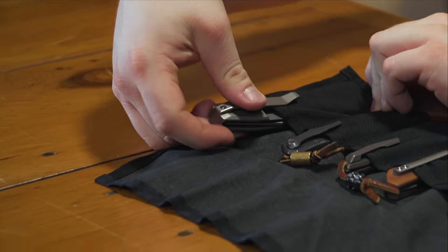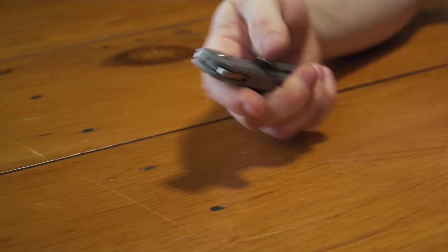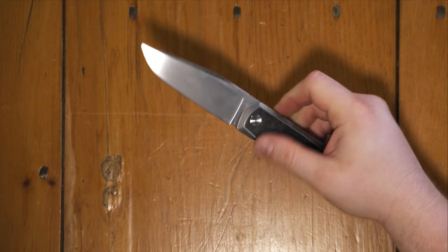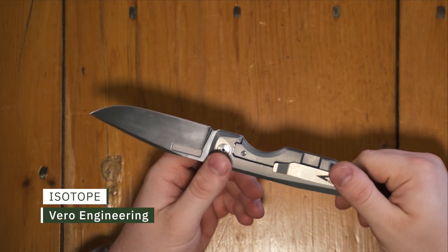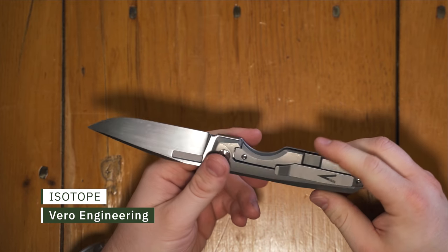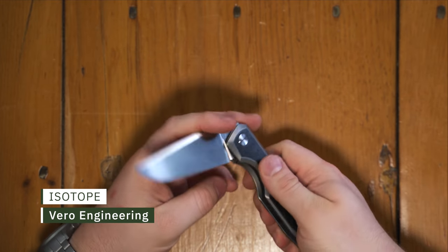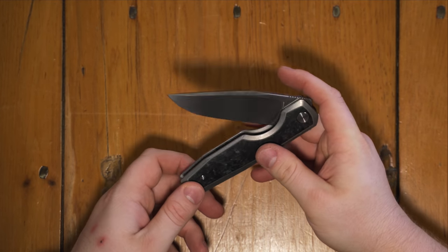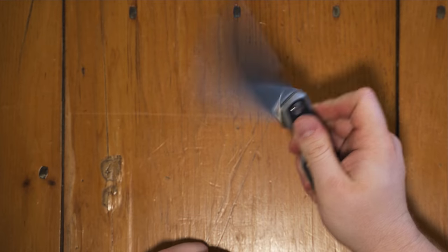Next up, we've got something a little bit different change of speed here. And that is a production knife from best tech. This is the Vero engineering isotope and integral frame lock on bearings with a very, very large drop point in M390 blade, very drop shutty finger guillotine. If you don't get your finger out of there in time, it's going to get cut.